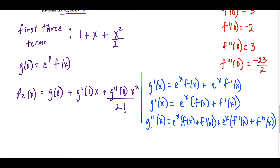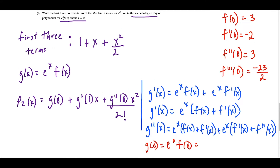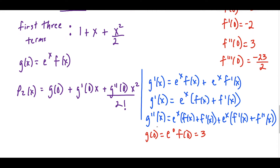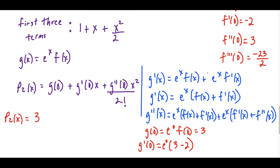g(0) equals e^0 times f(0), and f(0) is 3, so g(0) = 1 times 3 = 3. g prime(0) equals e^0 times (f(0) + f prime(0)) = 1 times (3 + (−2)) = 1 times 1 = 1. So our answer so far starts with 3 plus 1 times x.